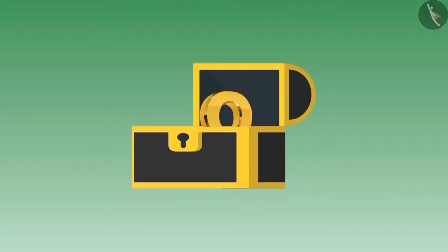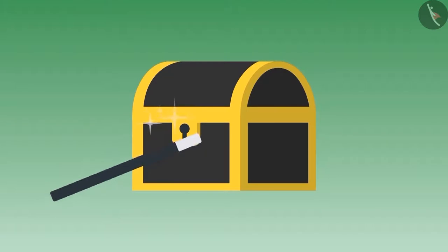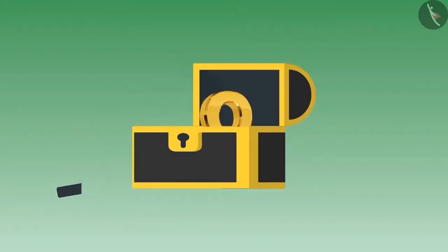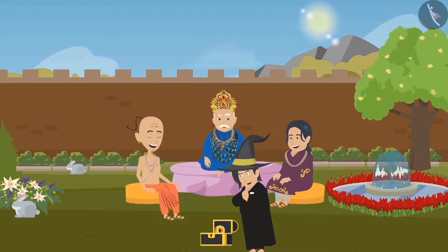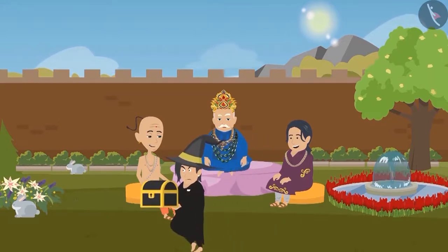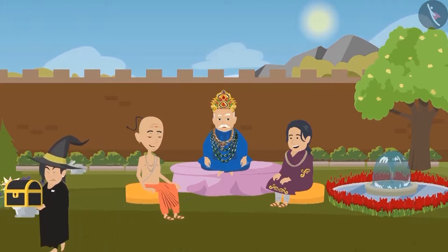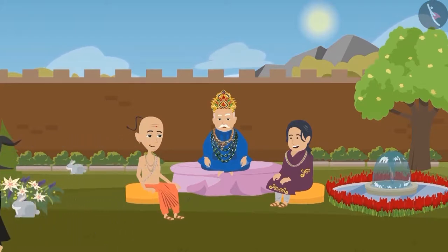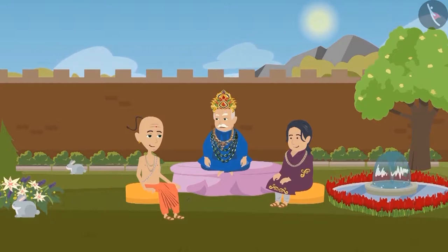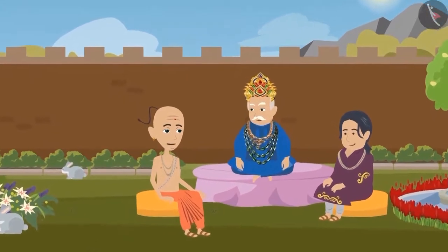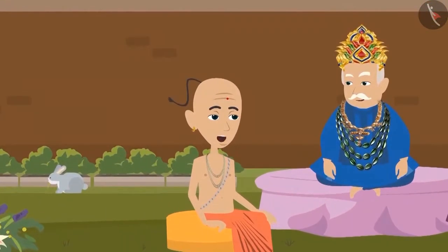The magician recited the magical words and performed the magic. The moment he opened the box, he saw that the object was upright once again. The magician tried again but could not succeed. Finally he gave up, apologized to the king, and left. The king was very happy.